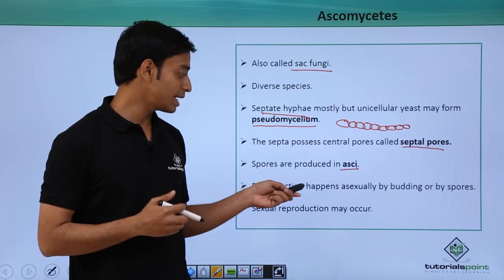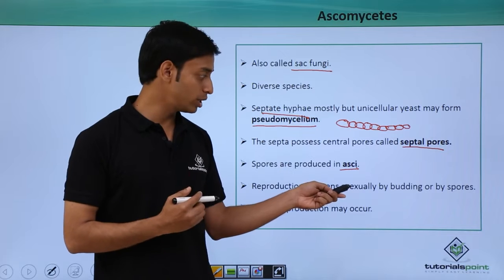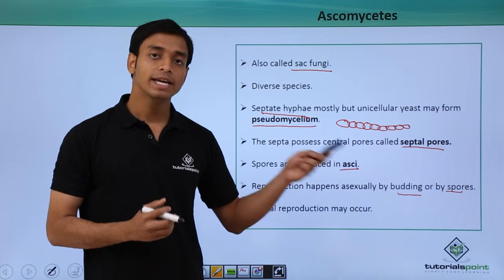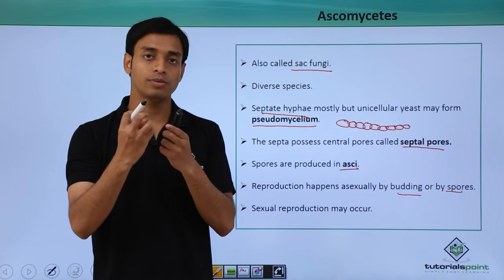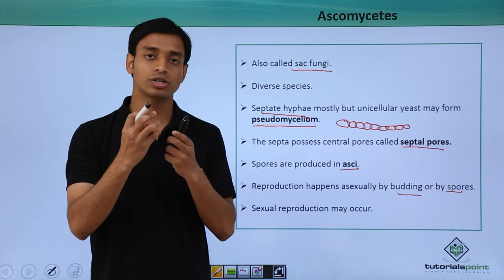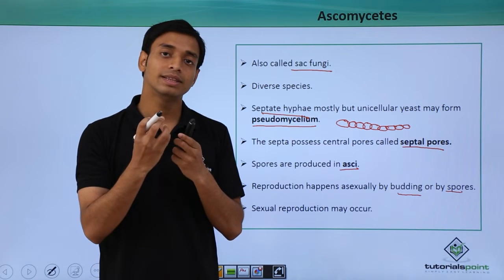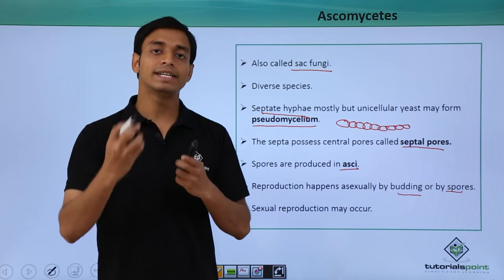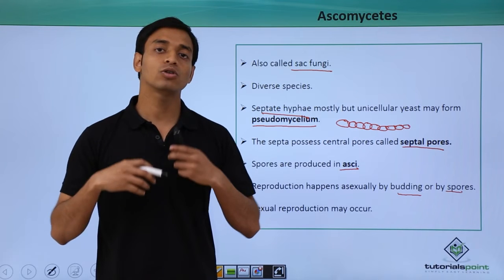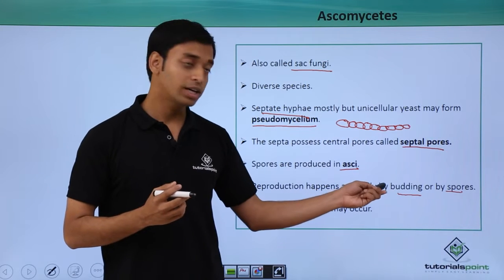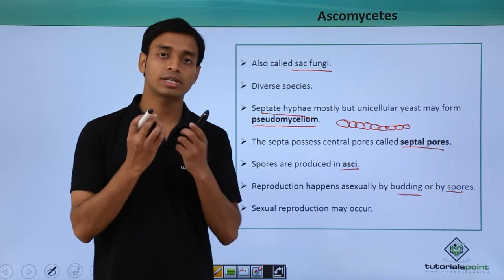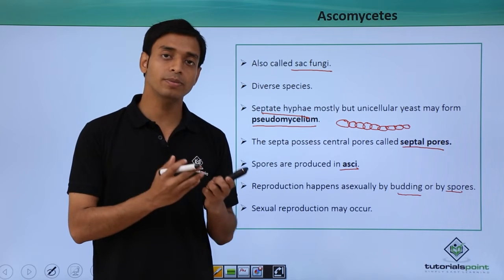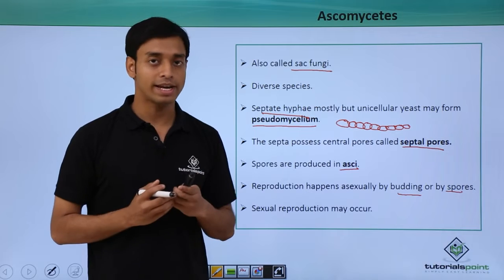Reproduction in ascomycetes can happen asexually by budding or by the formation of spores. In budding, a small outgrowth is formed, which grows, matures, its weight becomes heavy, and it slowly detaches from the parent body to grow into an individual organism. Spores are structures formed under unfavorable conditions and can germinate into new organisms under favorable conditions.